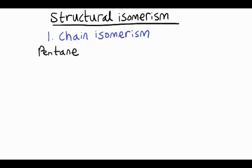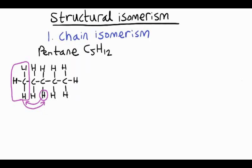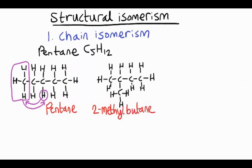Let's take for example pentane, which has a formula C5H12. The straight chain form of pentane looks like this — don't forget to put those hydrogens in. If we want to make isomers of pentane, we need to shift the atoms around by breaking bonds but without removing or adding any new atoms. So if we swap the end carbon with that hydrogen, we'd have a methyl group on the second carbon. Pop all the hydrogens in and we've got a new molecule. The first one's called pentane, and this new molecule is called 2-methylbutane, because there are four carbons in the longest chain.